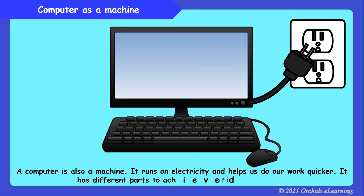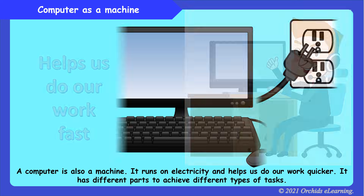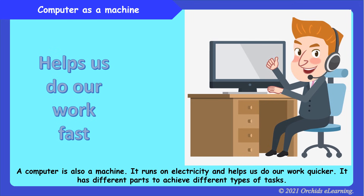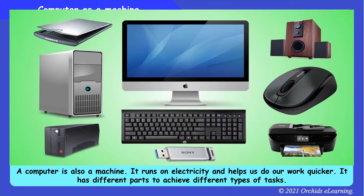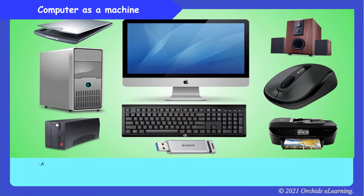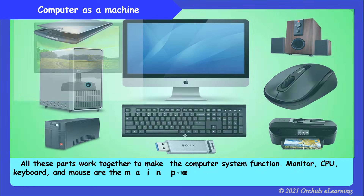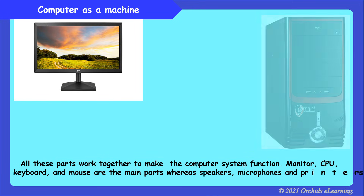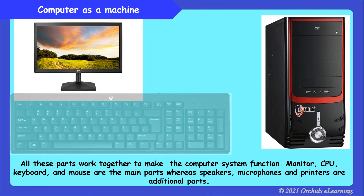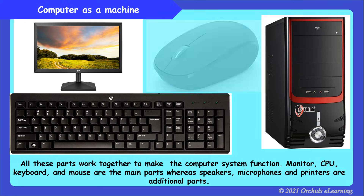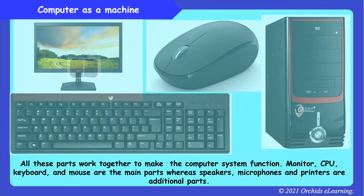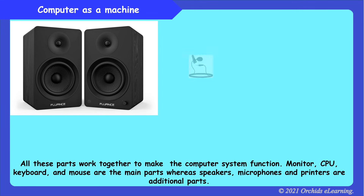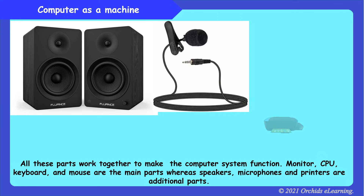A computer runs on electricity and helps us do our work quicker. It has different parts to achieve different types of tasks. All these parts work together to make the computer system function. Monitor, CPU, keyboard, and mouse are the main parts, whereas speakers, microphones, and printers are additional parts.